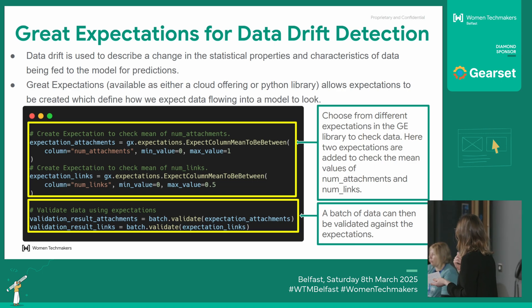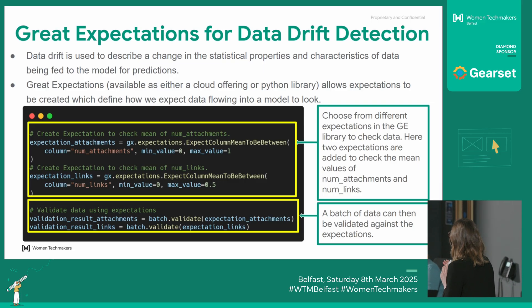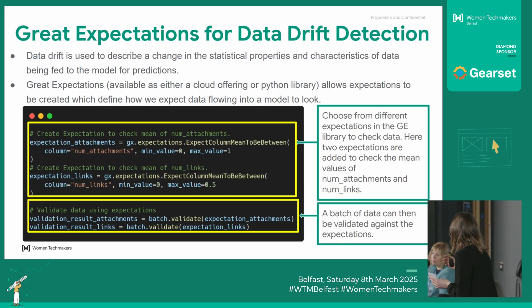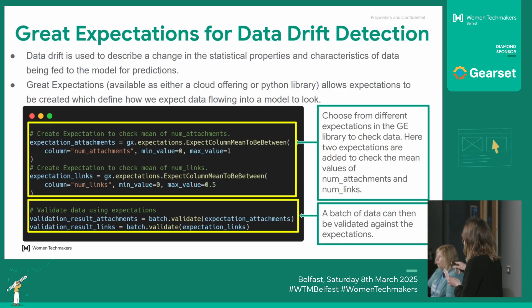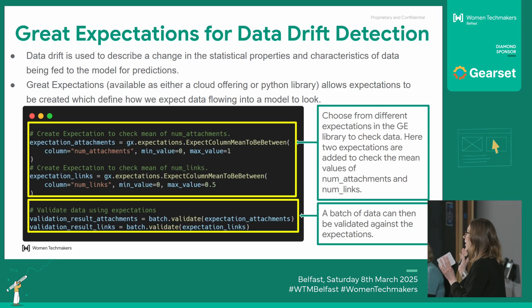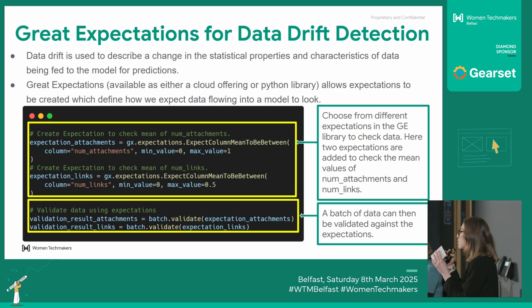This is where this data drift detection tool comes in. It's a Python library or a cloud offering — I've looked at the Python library here. What it lets you do is essentially profile all your training data, so you get all these stats on the data you trained the model with: the average of different columns and all these metrics. And then after you deploy the model into production and you're getting requests coming in, you can say, for example, every week: let's look at the last batch of data in production and run these same stats on that and compare them. That way you can see if there's a change in that data.